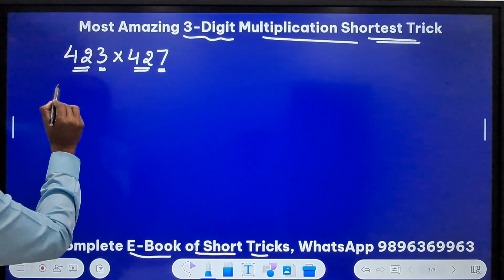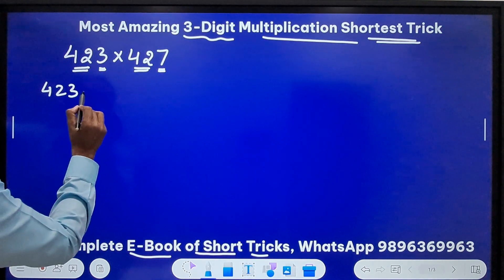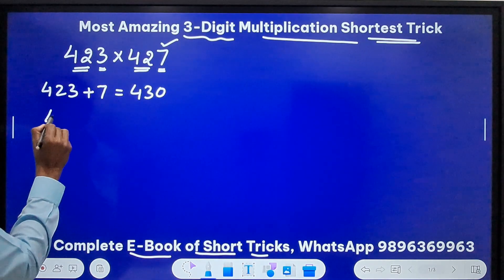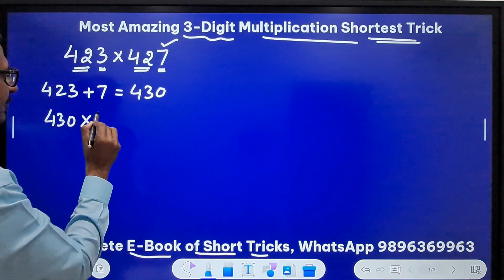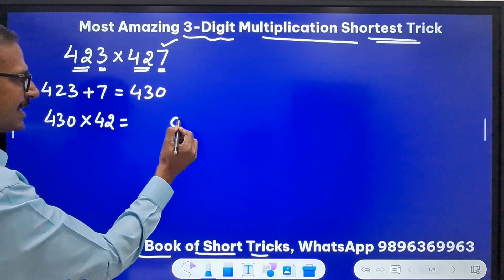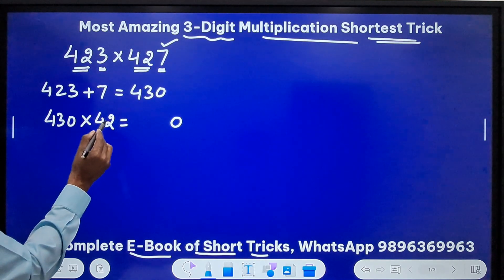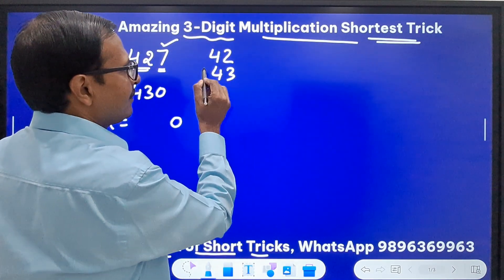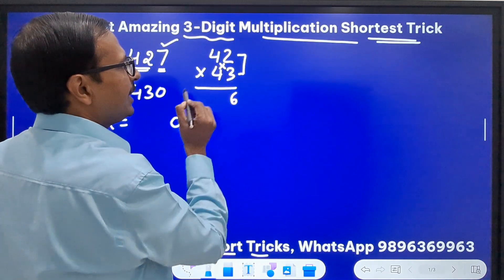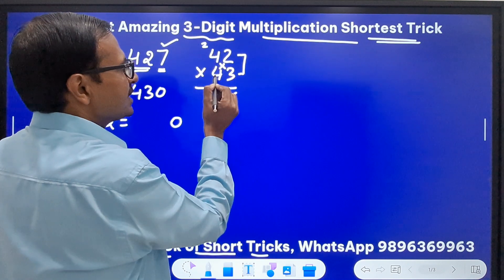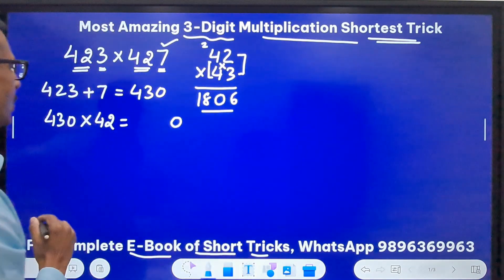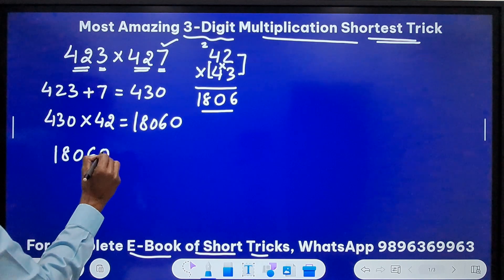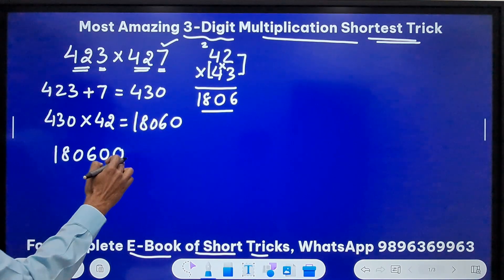First thing is if you take 423 the first number and add the last digit of this number 7 you get 430. And now 430 is to be multiplied by the first two digits here 42. Now how do you do this? A 0 is obvious there because you have this number ending in 0. So you need to do 42 times 43. So for doing 42 times 43 you can use the Vedic approach. 42 times 43 is, this is 6 and this is 12, 12 and 8, 20. 20 means 0 and a 2 carry. 4 fours are 16 and 2, 18. So 1806.